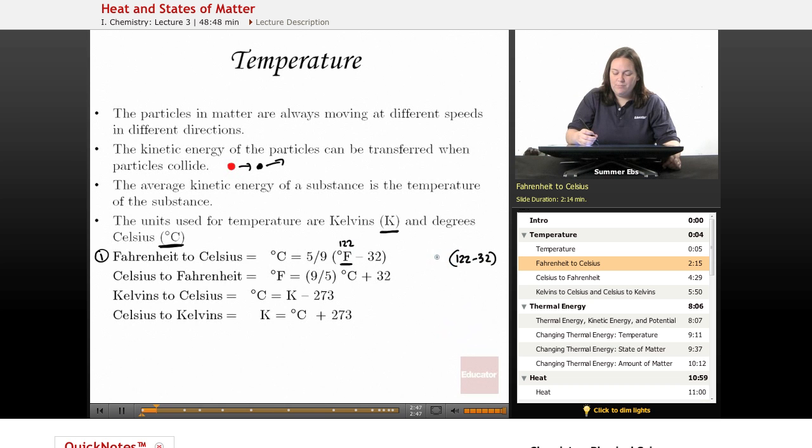So you're going to end up with 122 minus 32, and that will be in your parentheses. You're going to multiply that number by 5 ninths, and that will give you your degrees Celsius. So order of operations, you need to do what's in the parentheses first.